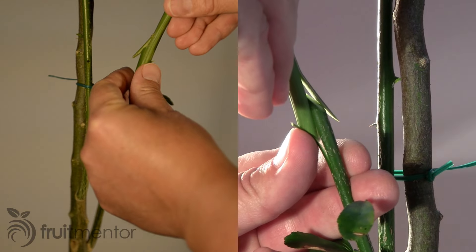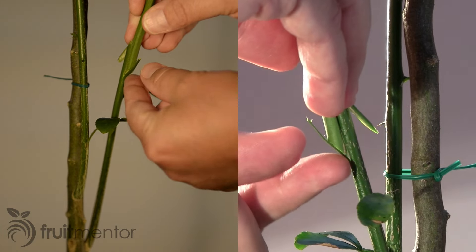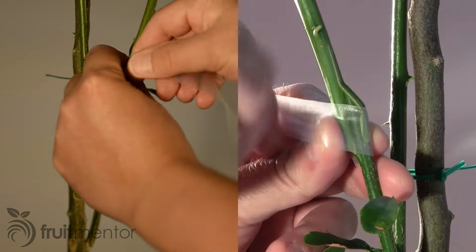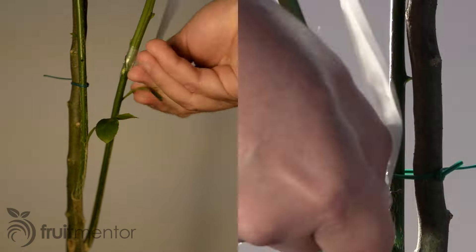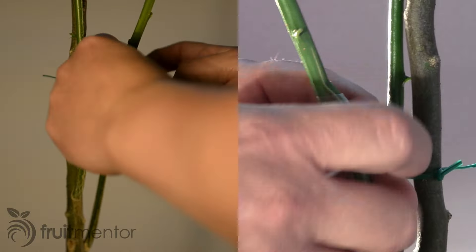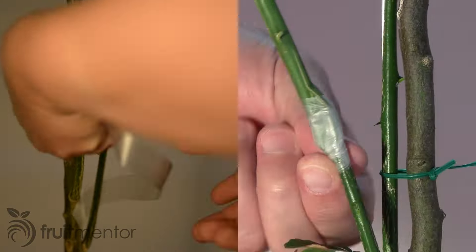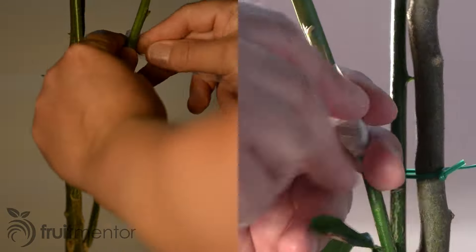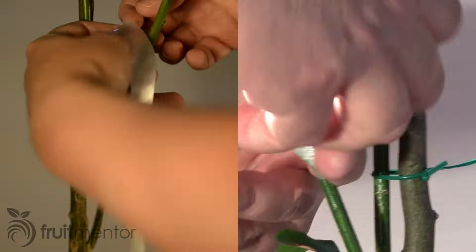Next I fit the scion into the rootstock to form the Z. I wrap the graft union with a product called Parafilm M to seal the graft and hold it in place. To get a good seal, I gently pull on the Parafilm as I wrap it. This makes it stick to itself.